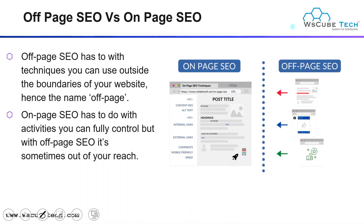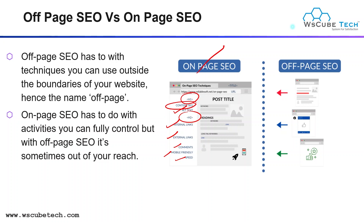Now it's time to discuss off-page SEO versus on-page SEO — what is the difference between these? In the case of on-page SEO, we can work on elements like your H1 tag, content SEO, alt tags, H2 headings, internal links, external links, comments, mobile-friendliness, and speed. But in the case of off-page SEO, we work outside the boundaries of your website, and that's why it's called off-page SEO.